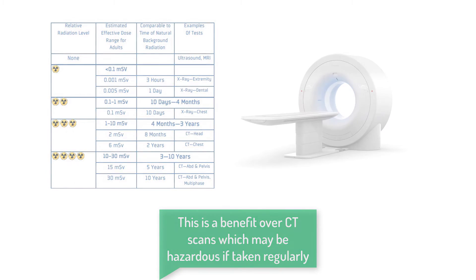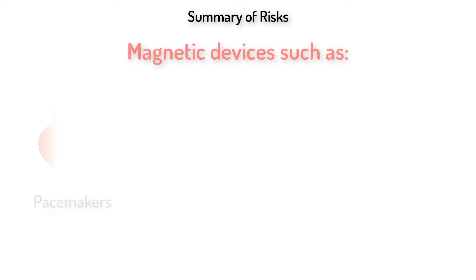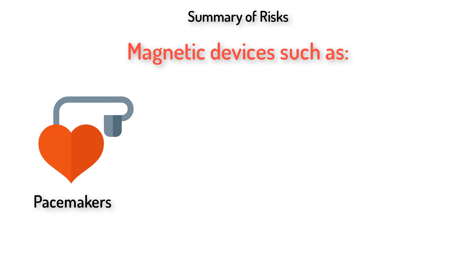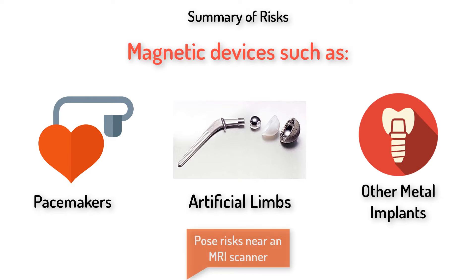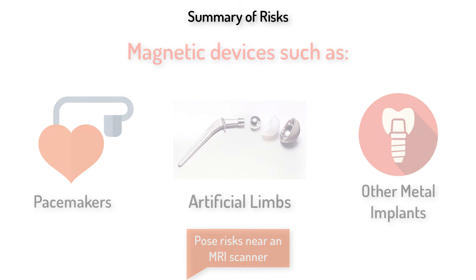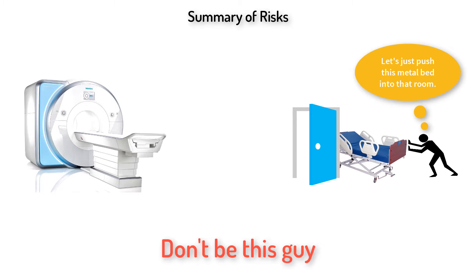However, due to the use of magnetic fields, certain metal objects pose significant safety hazards. For example, magnetic implants such as pacemakers, artificial joints, and structural rods can move dangerously in an MRI scanner. As a result, a patient should always be screened for metal objects before undergoing an MRI scan.